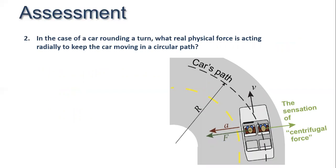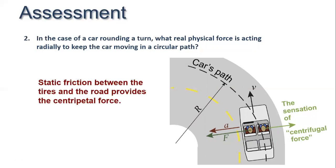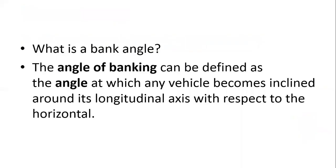In the case of a car rounding a turn, what physical force acts radially to keep the car moving in a circular path? The velocity of the car is v and radial distance is r. The sensation of centrifugal force is outward, while static friction between the tires and the road provides the centripetal force.